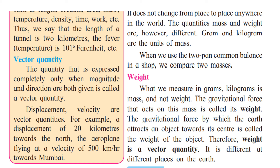Therefore, weight is a vector quantity. Remember, a vector depends on both magnitude and direction — here the direction is towards the center of the earth. Weight is different at different places on the earth. If you go to the polar regions it will be different; if you come towards the equator it will be different. So mass and weight are different.